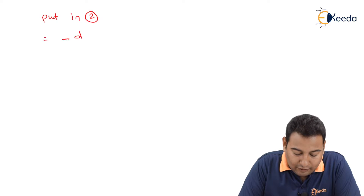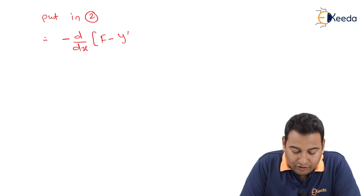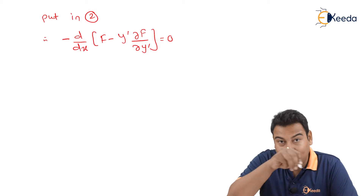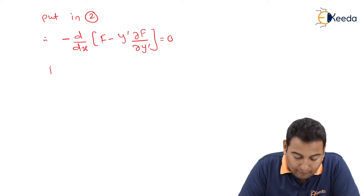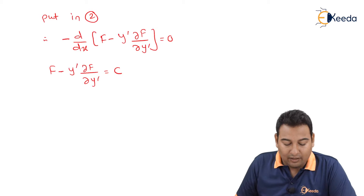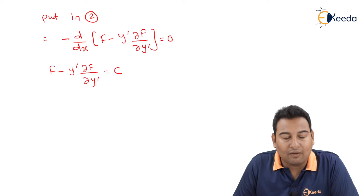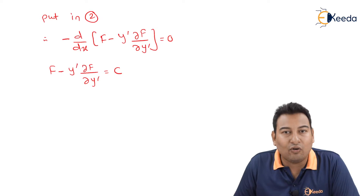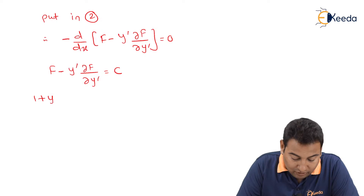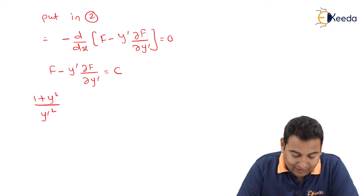Substituting ∂f/∂x = 0 into equation two gives −d/dx(f − y'·∂f/∂y') = 0, which means f − y'·∂f/∂y' = c. We just need to substitute the value of f, which is (1 + y²) / y'², to get the value of y.